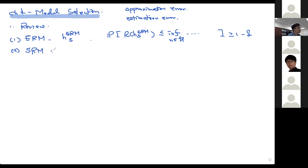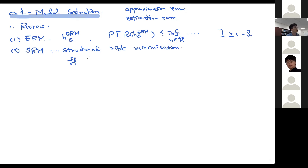In structural risk minimization, instead of saying our hypothesis set H is just a monolithic set without any structure, we say this hypothesis set can be understood as stratified — it's going to be a union of some small hypothesis sets H_K, where H_K becomes more expressive as we increase K.